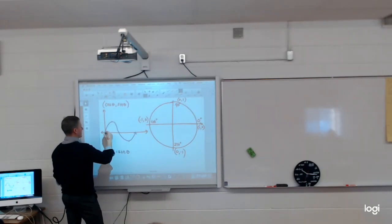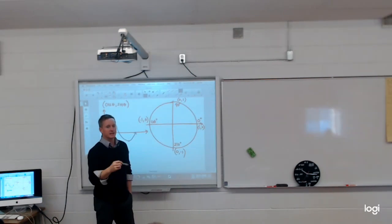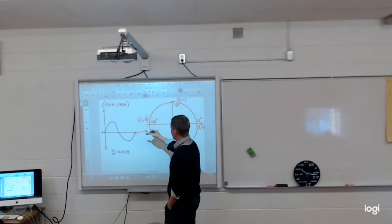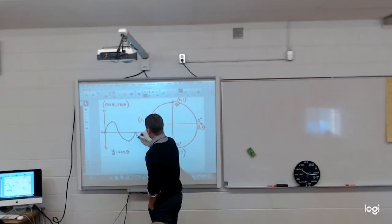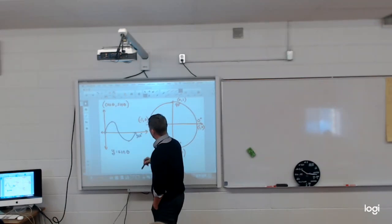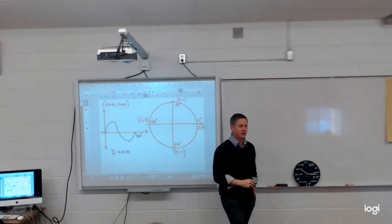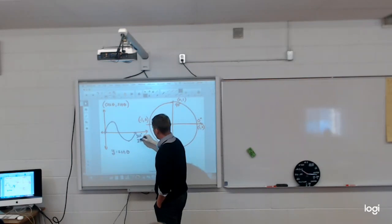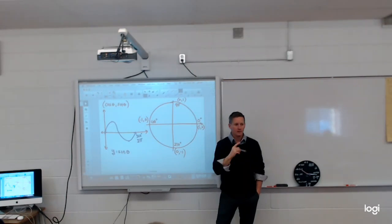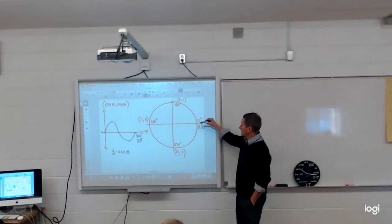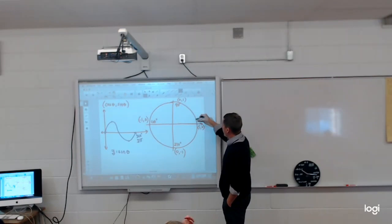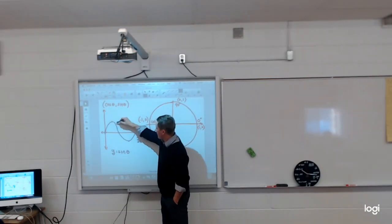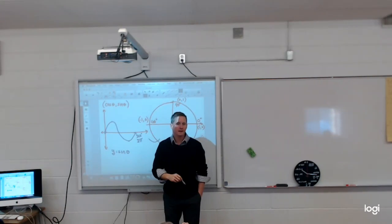It is called a periodic function because it repeats itself. When does it repeat itself? Every 360 degrees or every 2 pi. So I started right here and go all the way around the circle, and that's what all of these values come from — around that circle.